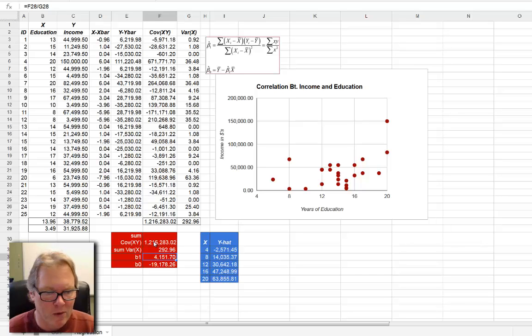Coming down to the cell below labeled for beta hat sub 0 or B sub 0, you can see I'm taking my mean value of income minus the product of the mean value of education times beta hat sub 1, and I'm getting my predicted value. I'm getting my intercept or constant, beta hat sub 0.